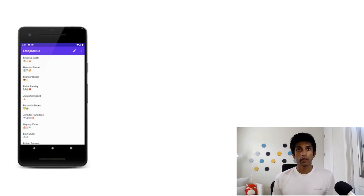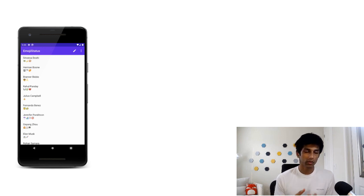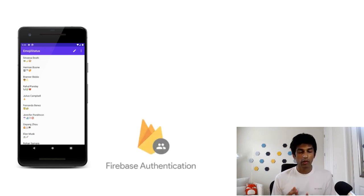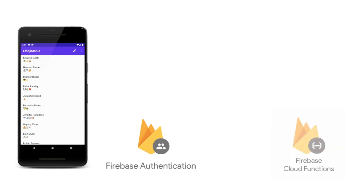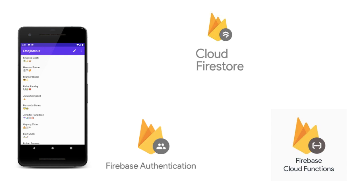There are three Firebase services that we'll use to power our emoji status app. First is Firebase authentication for signing in and out of our app. Next is Firebase Cloud Functions, which allows us to execute some JavaScript code on a server whenever an event happens in our app. And third is Cloud Firestore, which is essentially the database for our app. Hopefully in the next few minutes, you'll see how these different pieces fit together.